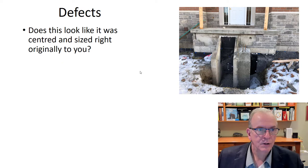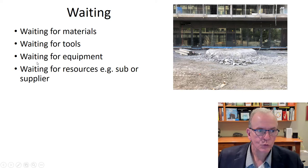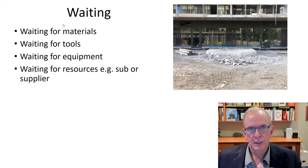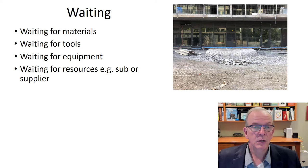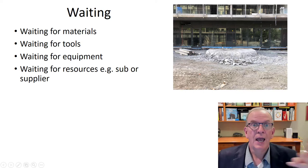Waiting — waiting for materials, tools, equipment, resources — this is a big one where supply chain management becomes important. It requires commitment from the trades involved and different kinds of contracts. Sometimes sub-trades don't want to be involved in upfront planning, but you need them there because later they'll say 'this slab can't be there.' Better to identify that ahead of time. Yes, they waste a few hours in meetings — but that's better than days with jackhammers.